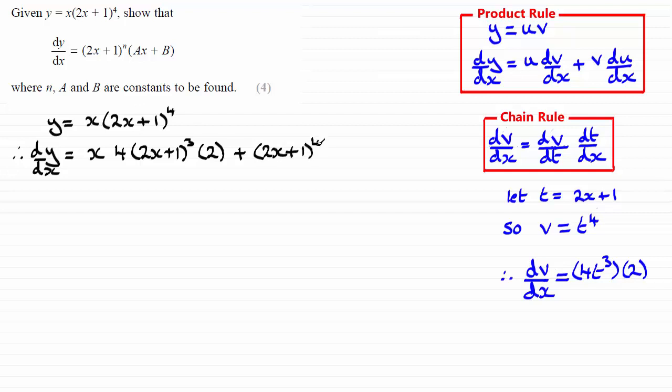And then that is multiplied by du by dx. u is the x, so I differentiate x with respect to x and you get 1. I'll just put the 1 in there just as a token to show that I differentiated it.